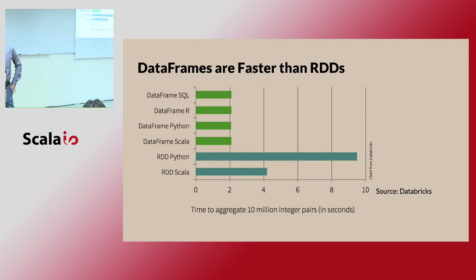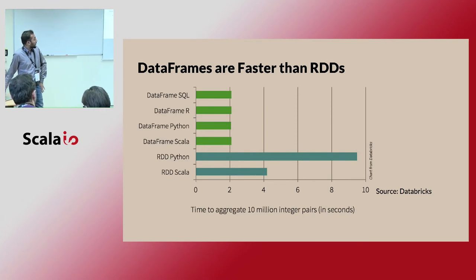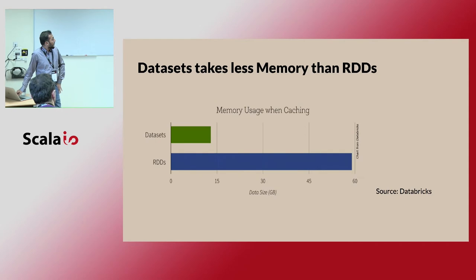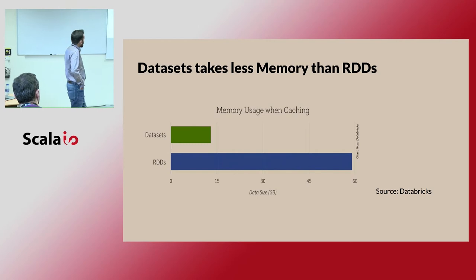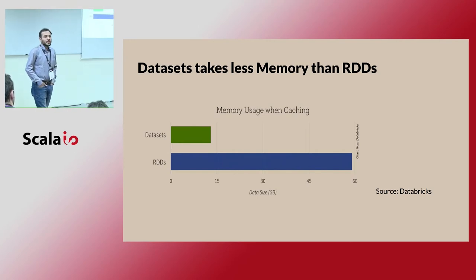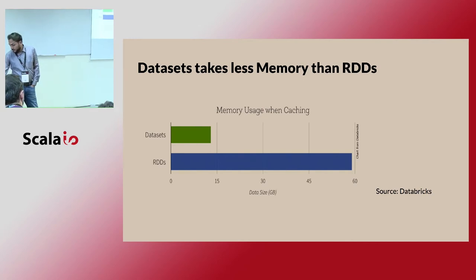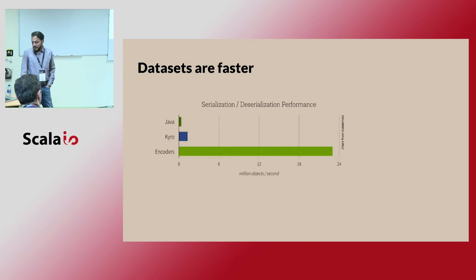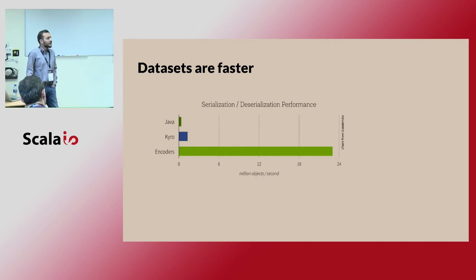Looking at which data structure is faster across Python, Scala, and R: if you use Dataset and RDD in terms of memory usage when you cache it, it takes less cache time. In terms of serialization and deserialization performance, Spark uses built-in encoders by default rather than Kryo or Java serialization.